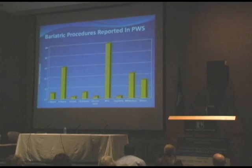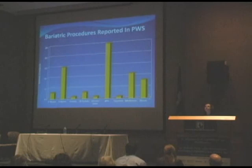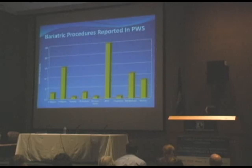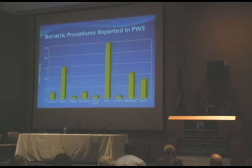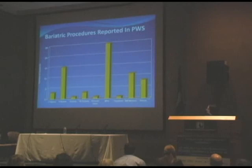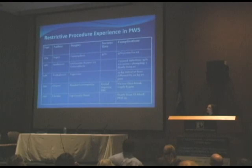Looking at cases reported in Prader-Willi syndrome: three patients had jejunal-ileal bypass, about 15 with gastric bypass, approximately five with band gastroplasty, one with a band (which is good — I'll show you why it shouldn't be more), 25 had biliopancreatic diversion, one vagotomy in the late 1970s, a series of 12 patients who had an intragastric balloon as a temporizing measure from Italy, and sleeve gastrectomy has been reported in nine patients.